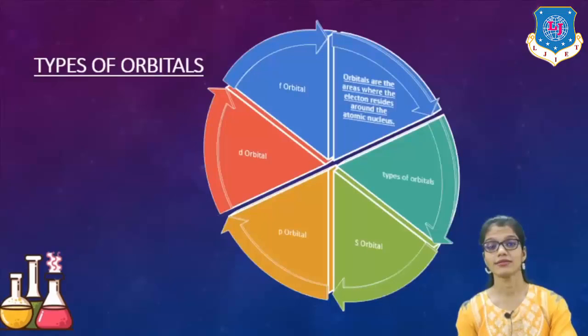We will begin with the next theory, another part of this chapter: types of orbitals. Till now what we have studied is the electrons, what is the distance and how we can find out the position of the electron.